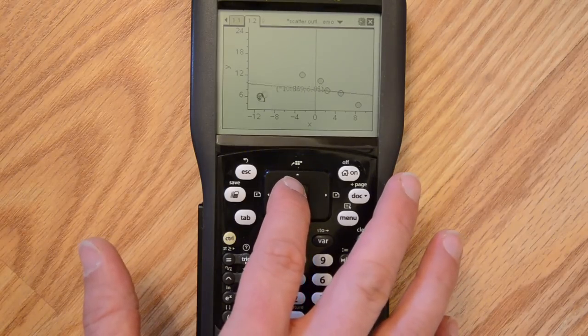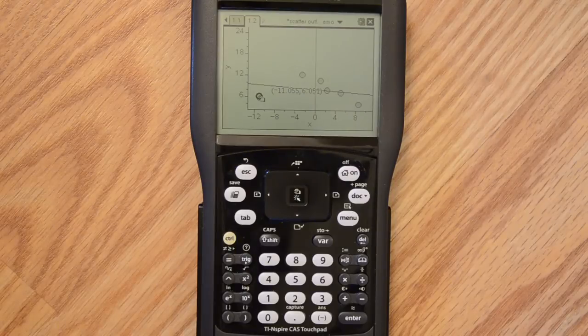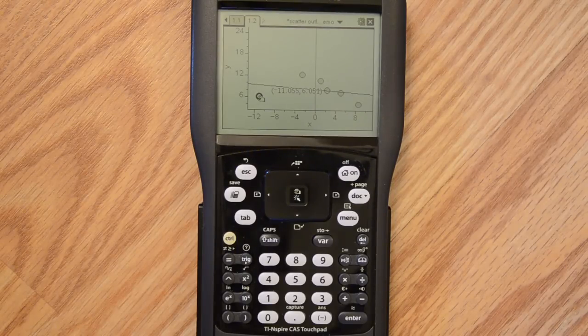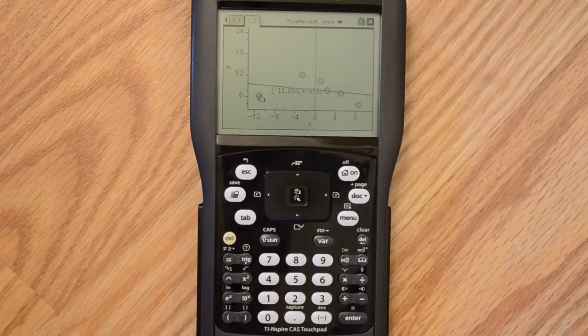So, just to show you the difference through some active calculator work and display that there is a difference between just a regular outlier and an influential point.